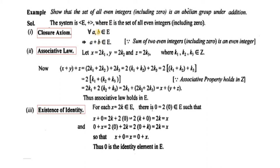Now we have the associative law. Let we have three even integers x, y, z, where x is equal to 2k₁, the second one is 2k₂, and the third one is 2k₃, where k₁, k₂, k₃ are integers. Now we have to prove the associative property which is (x + y) + z.